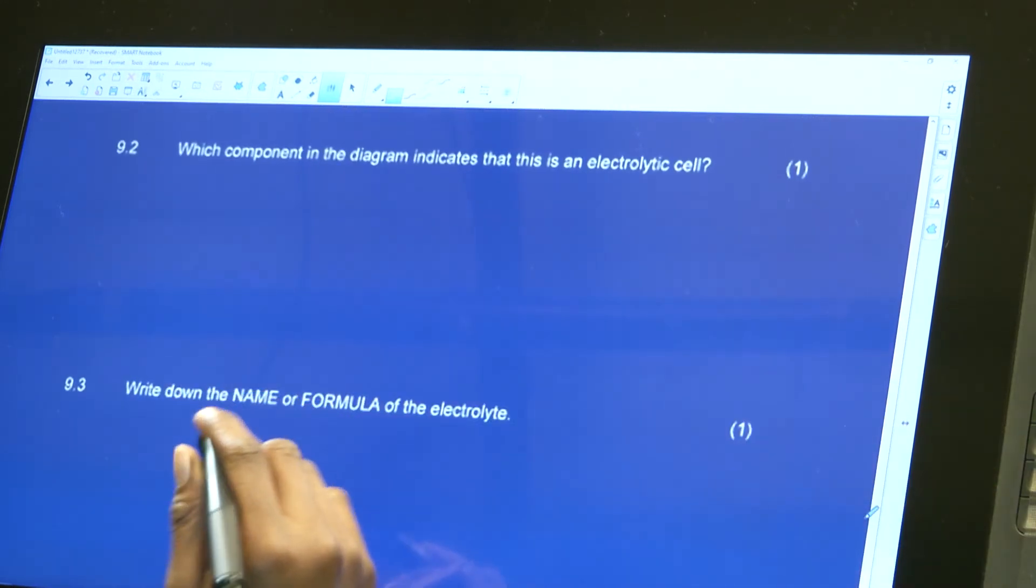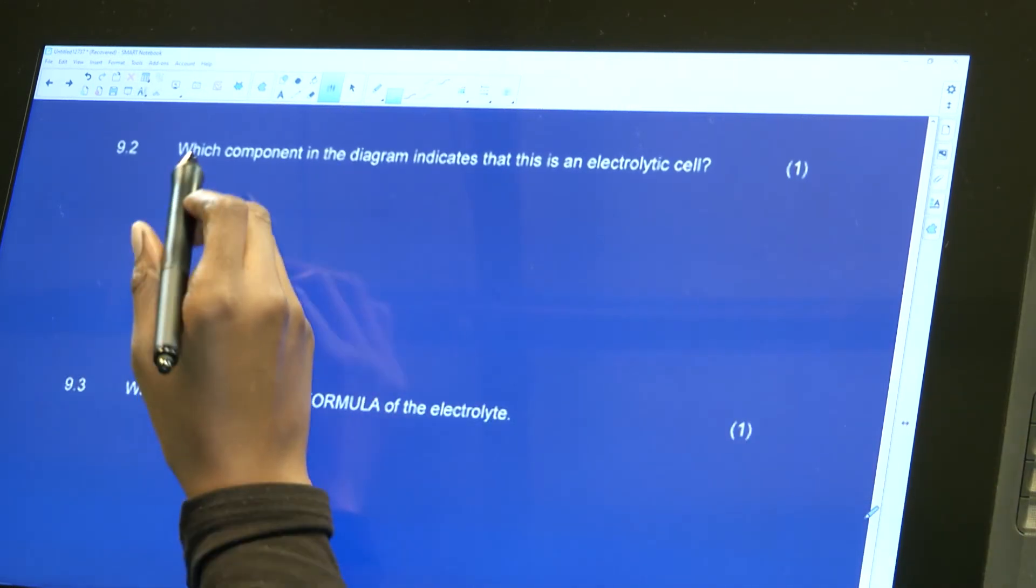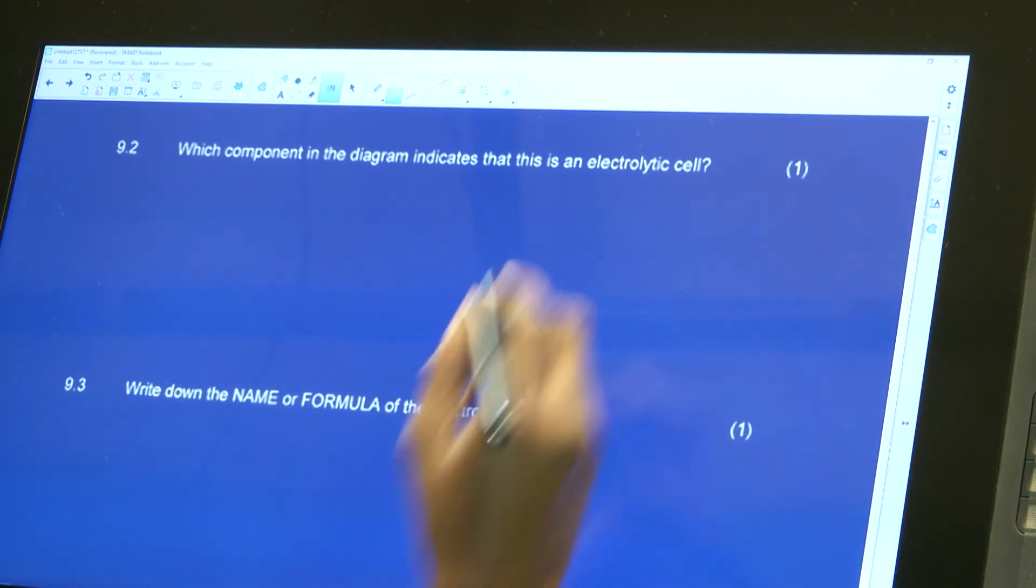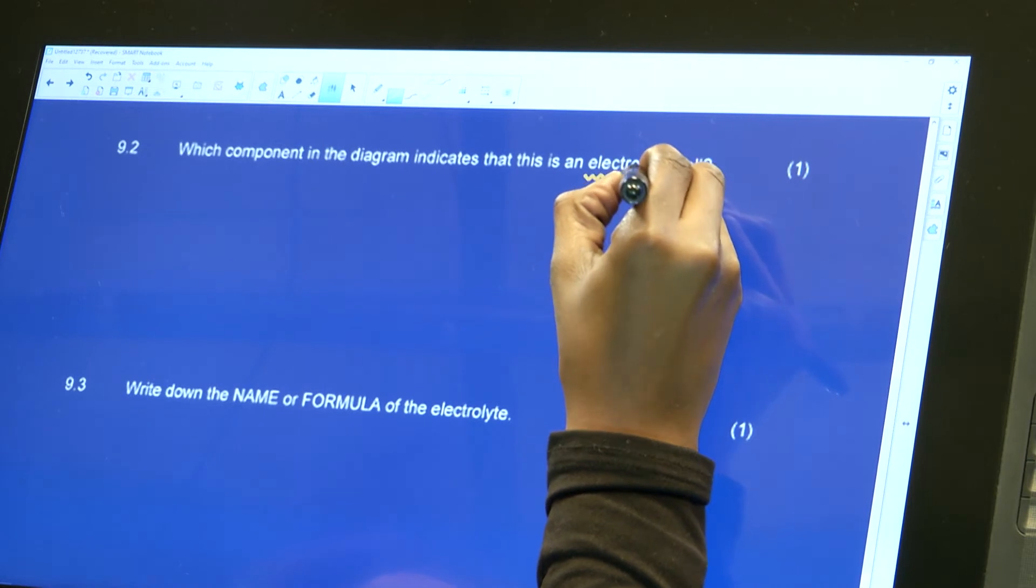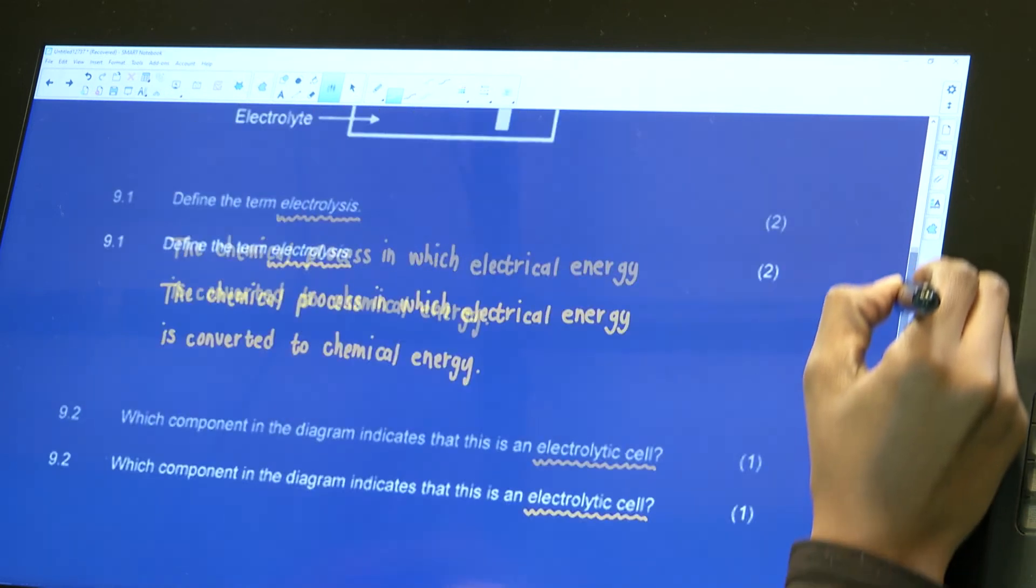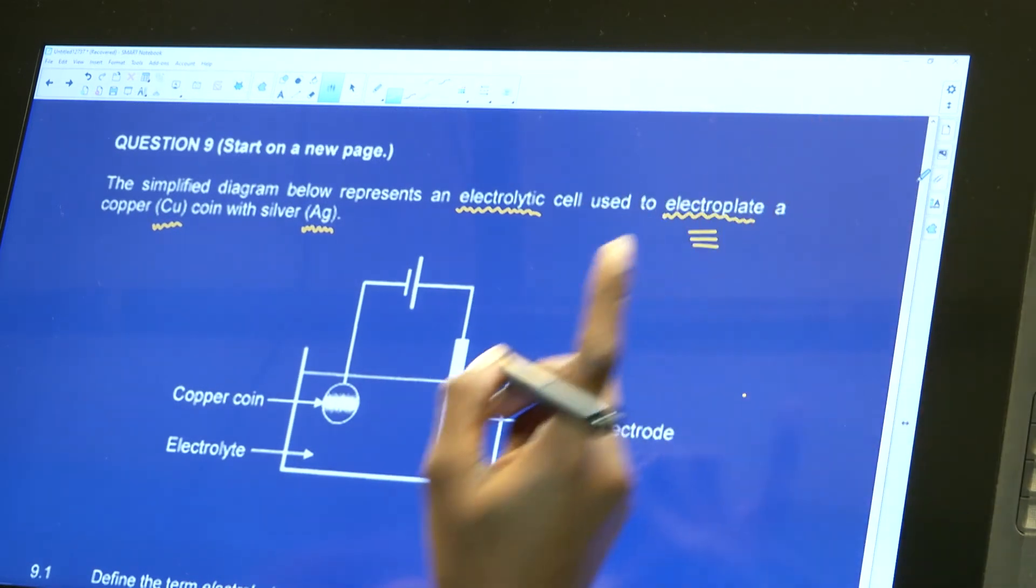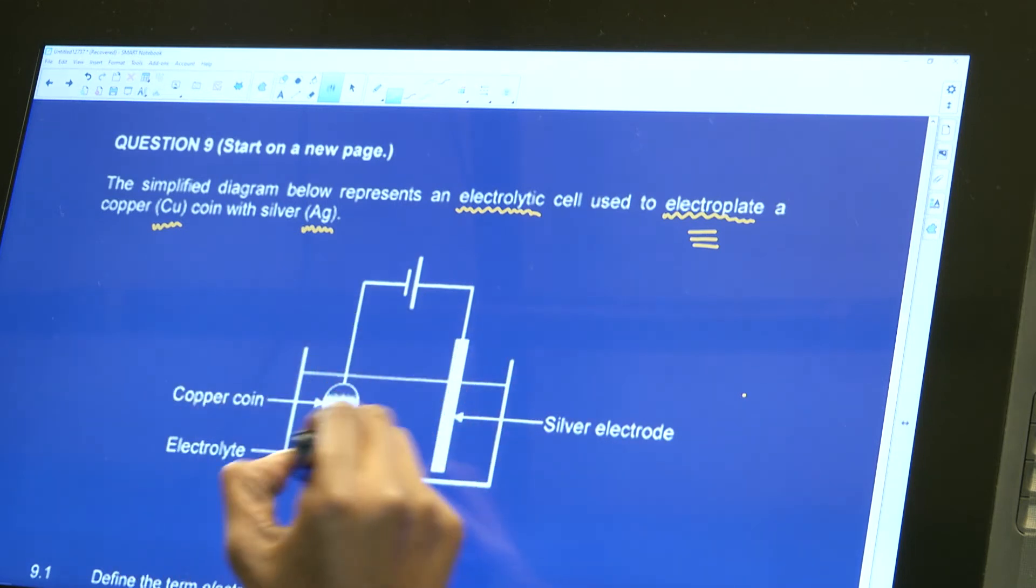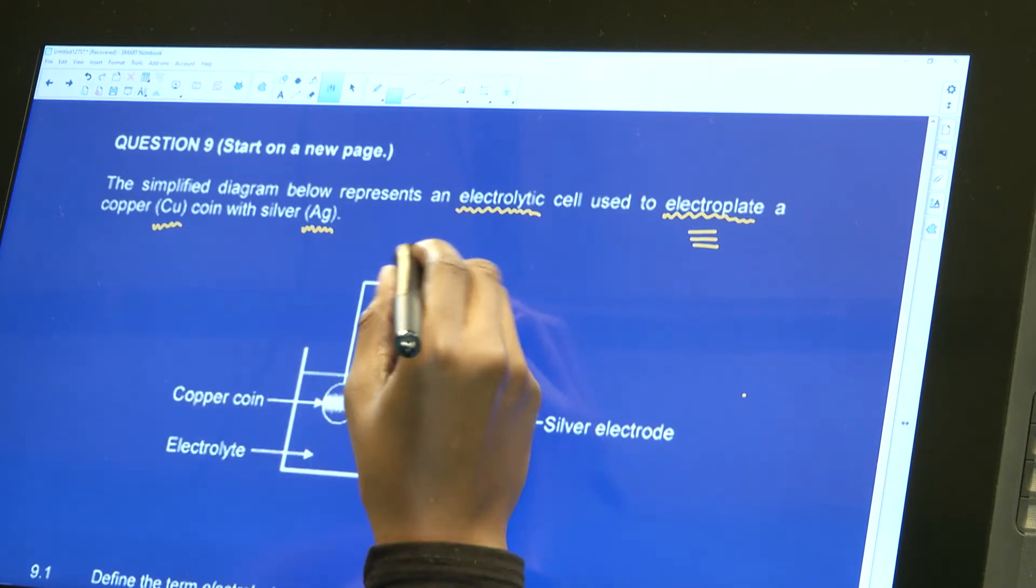Number 9.2 says which component in the diagram indicates that this is an electrolytic cell. Remember there's a difference between a galvanic and voltaic cell and an electrolytic cell. The difference between the two is this one is in one beaker, the other is in two beakers. We have two solutions in the other one, here we only have one, and then we have a cell there.